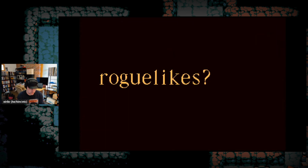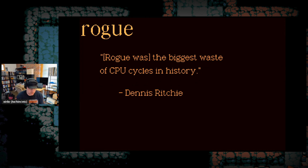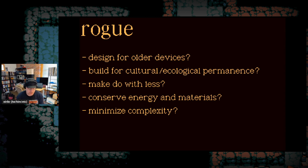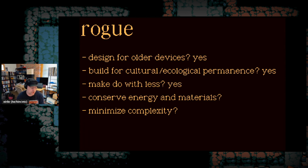What about roguelikes — what do they have to do with permacomputing? Dennis Ritchie once said that Rogue was the biggest waste of CPU cycles in history. I'd argue that Rogue fit our permacomputing directives fairly well. It targeted systems that already existed — new gaming hardware did not need to be created to play Rogue. For permanence: 40 years later we're still playing and talking about Rogue and its descendants. Do less: Rogue did without graphics, sound, or animation; it used procedural generation to minimize assets and increase replayability; it could be played over a phone line in the early 80s. It was just one or a handful of people working on it. And for minimizing complexity: Rogue was simple enough that it was updated, ported, copied, and remixed into an entire genre. Rogue has been socially influential precisely because of its simplicity.